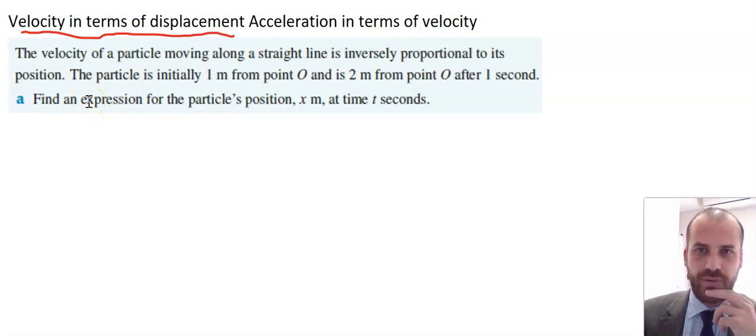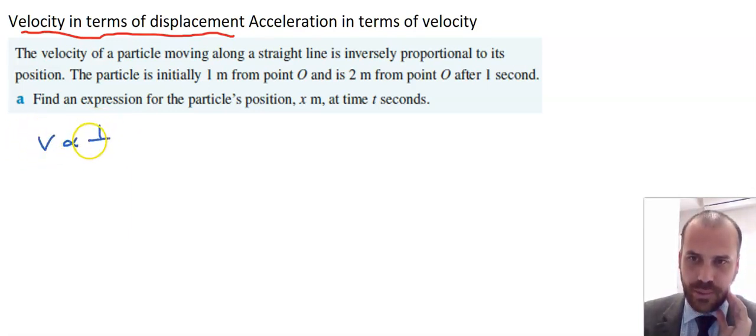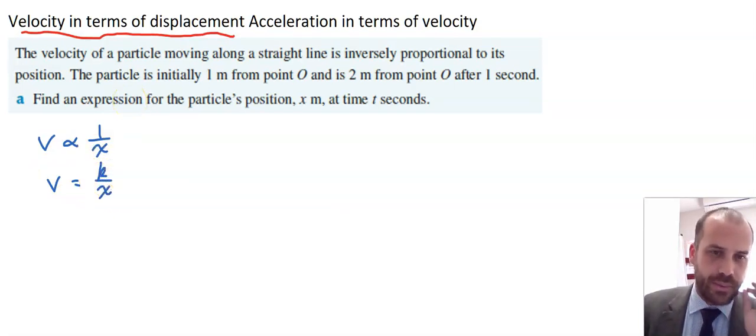Here's our question. The velocity of a particle moving along a straight line is inversely proportional to its position. So let's get started there. We're saying that the velocity is inversely proportional to its position. And we can now write that as an equation. V equals k over x. We don't know that k value, but we ought to figure it out.